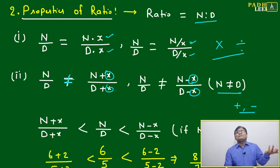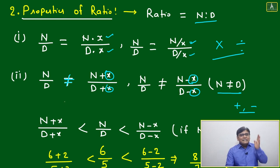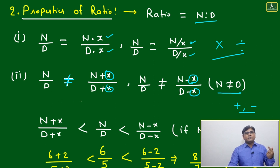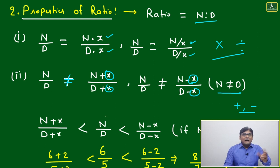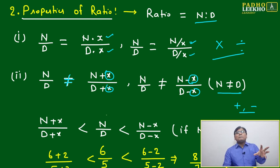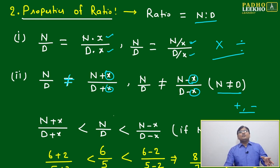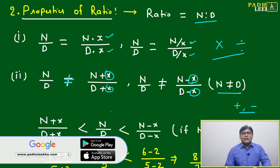So, if numerator is not equal to denominator, adding or subtracting the same number to both numerator and denominator will change the ratio. Contrasting that: multiplying or dividing both numerator and denominator by the same number will always keep the ratio the same.